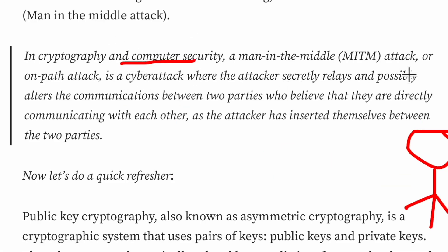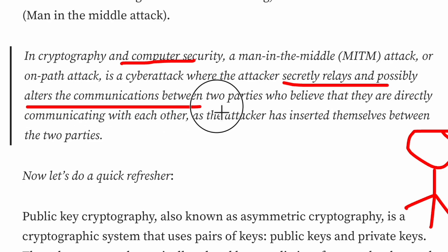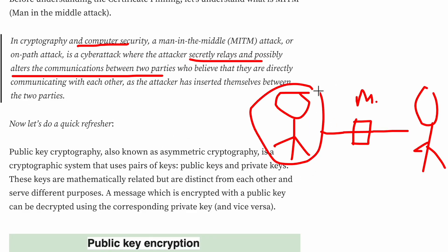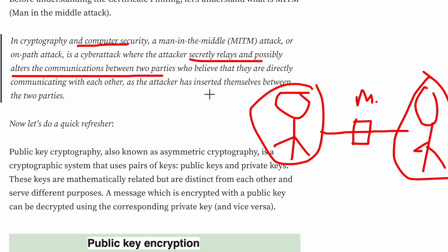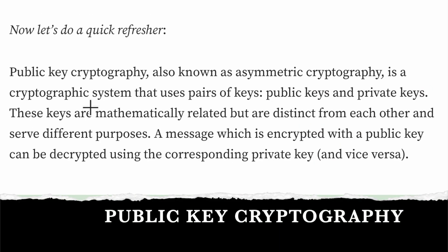In cryptography and computer security, a MITM attack — or on-path attack — is a cyber attack where the attacker secretly relays and possibly alters the communication between two parties who believe they are directly communicating with each other. The two parties are not aware that somebody else is sniffing their packets and possibly altering them, as the attacker has inserted themselves between the two parties.